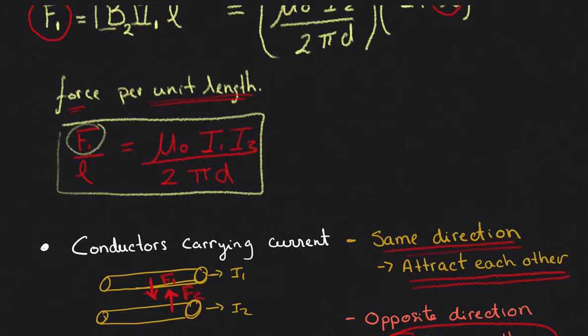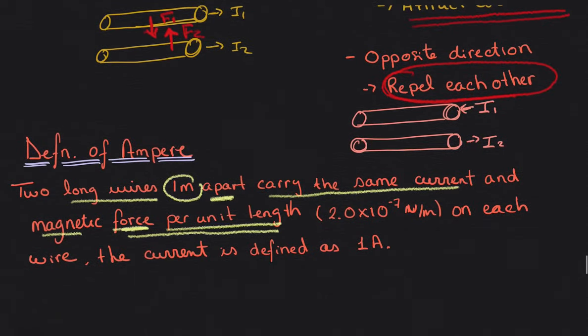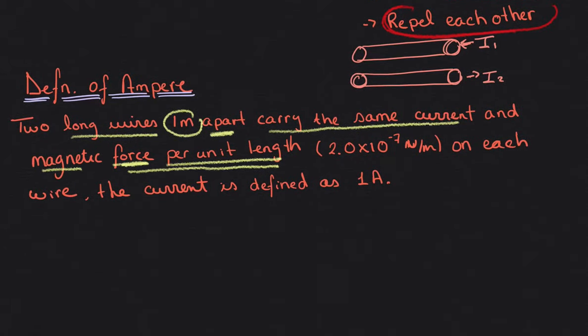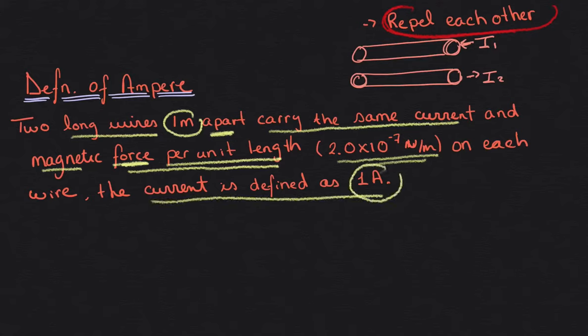So we now have two definitions for the Ampere. The first definition is that a steady current of 1 Ampere means the charge flowing through any cross-sectional area in one second is 1 Coulomb. We now have these two different definitions for the Ampere.